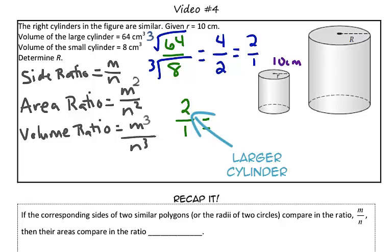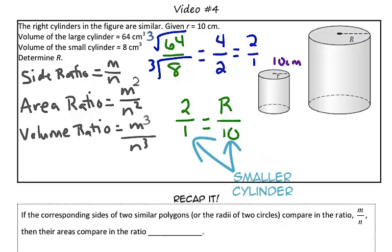So, in this case, we don't know our larger cylinder's radius, so we're going to call that r, over our smaller cylinder's radius, which is 10.